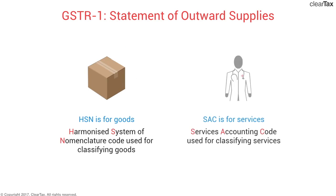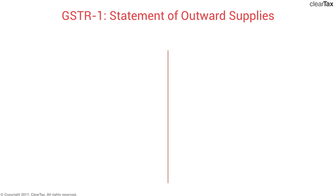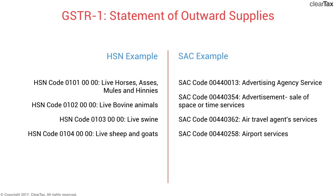HSN stands for Harmonized System of Nomenclature code, which is used for classifying goods. Each item sold or purchased in the country has a unique HSN code — the initial digits belong to a major category such as textiles, and subsequent digits identify more specific items like yarn or cotton. SAC — the Services Accounting Code — works in a similar manner for services. On screen you can see examples of the numbering for various product categories as well as SAC codes for different types of services.